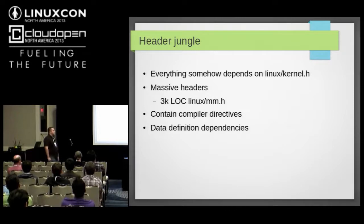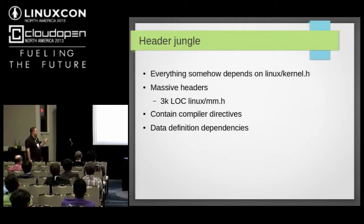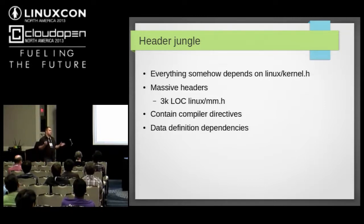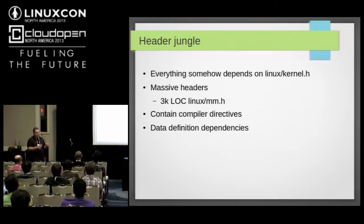Headers also have compiler and linker directives. It makes sense in the kernel — for example, specifying which section a function goes into — but it doesn't make sense for userspace. Kernel section layout doesn't make sense in userspace. There are also data definition dependencies, where the whole data isn't defined in one place but spread across a couple of headers. A good example is the list data structure, where the data type itself is defined in one header but implemented in a completely different, unrelated header. Getting those all together is quite problematic.